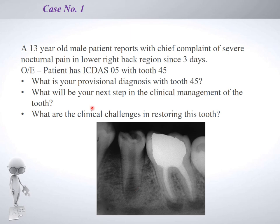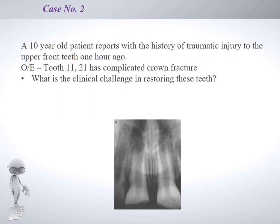In another scenario, a 10-year-old patient reports a traumatic injury to the upper front teeth one hour ago. Teeth 11 and 21 have a complicated crown fracture with pulpal involvement. The apices are quite wide open — the roots are not mature — so we have a clinical challenge of providing treatment for these situations with an open apex.